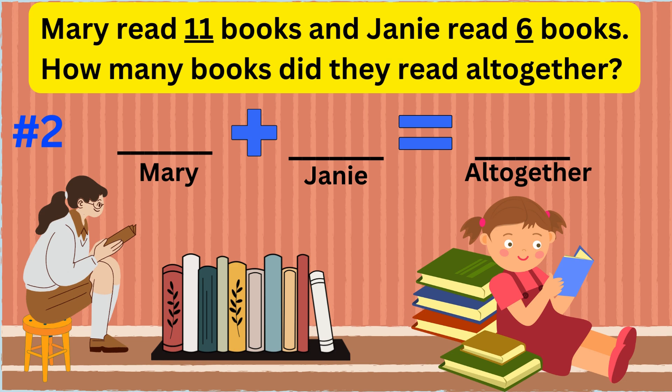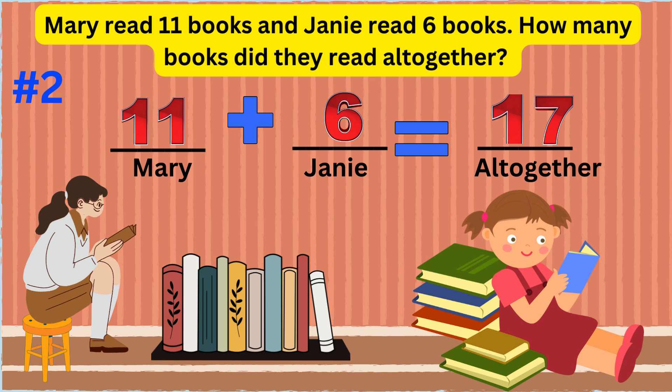Word problem number two: Mary read 11 books and Jang-ni read 6 books. How many books did they read all together? The answer is they read 17 books altogether. The number sentence is 11 plus 6 equals 17.